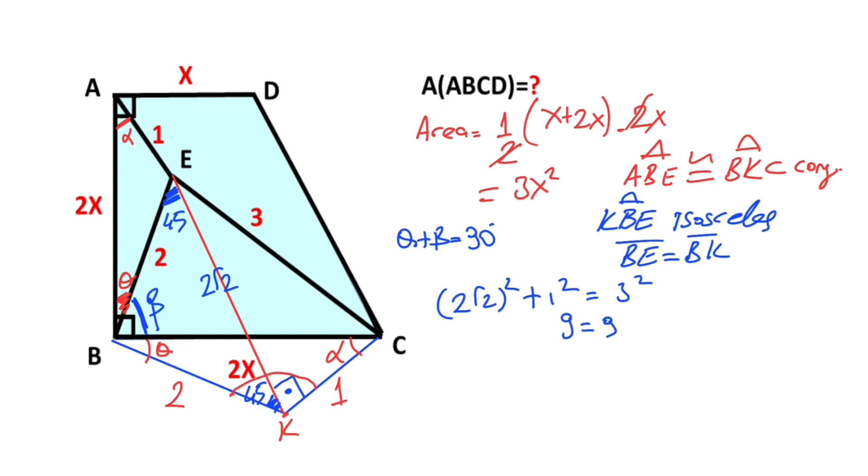Notice that angle BKC equals 145 degrees. We know that these two triangles are congruent, which means angle AEB must also equal 145 degrees.